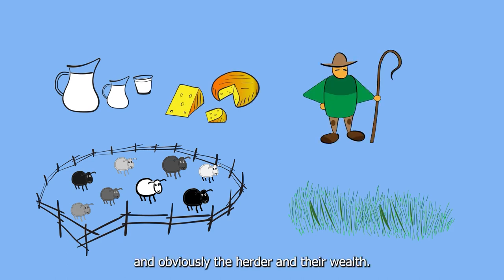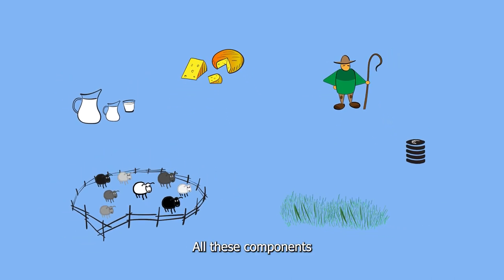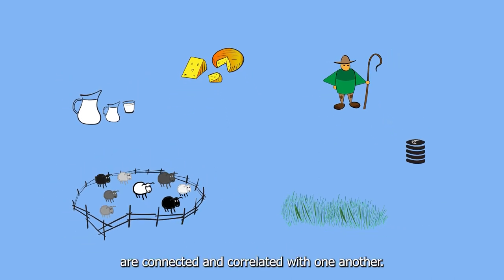All these components are connected and correlated with one another. For example, livestock and cheese are connected because cheese is produced with sheep milk. Using the fuzzy approach, we can define this connection to be very strong.